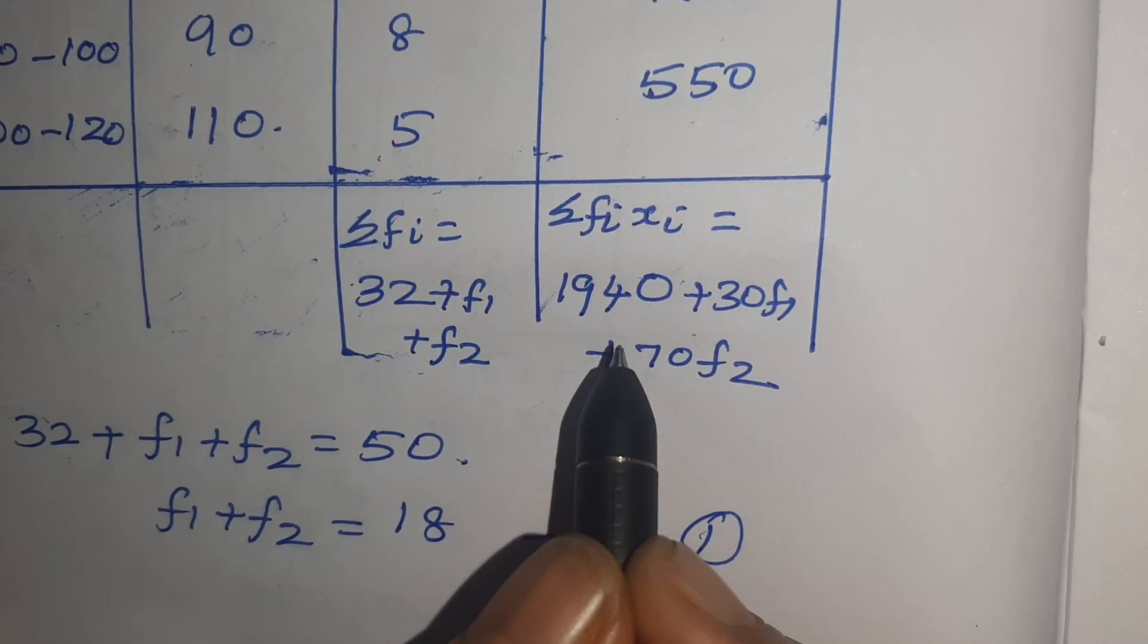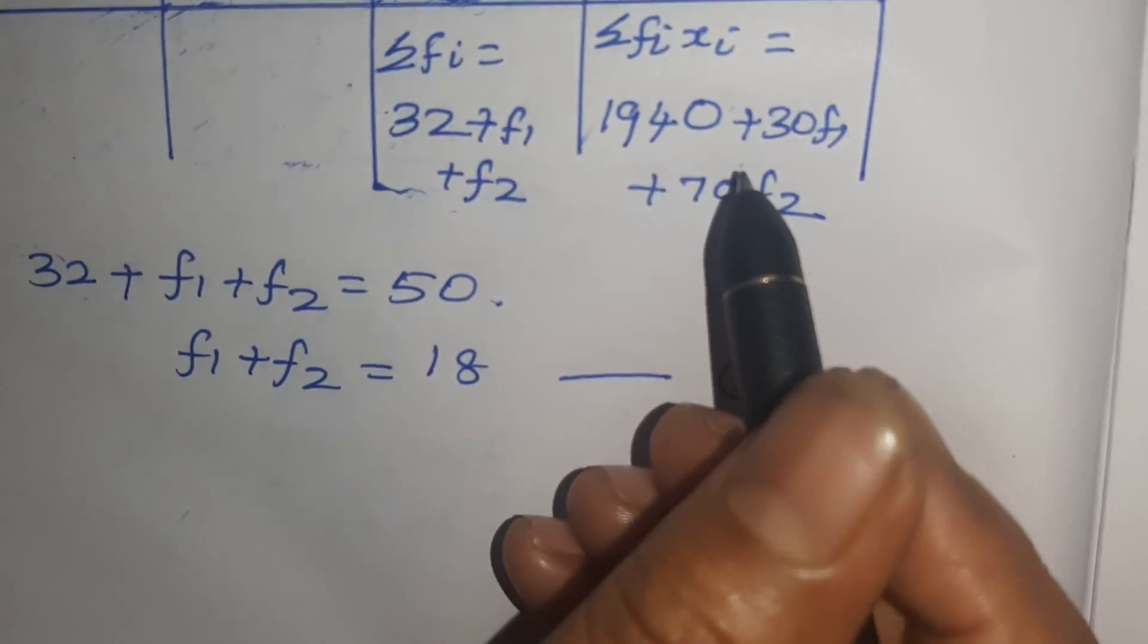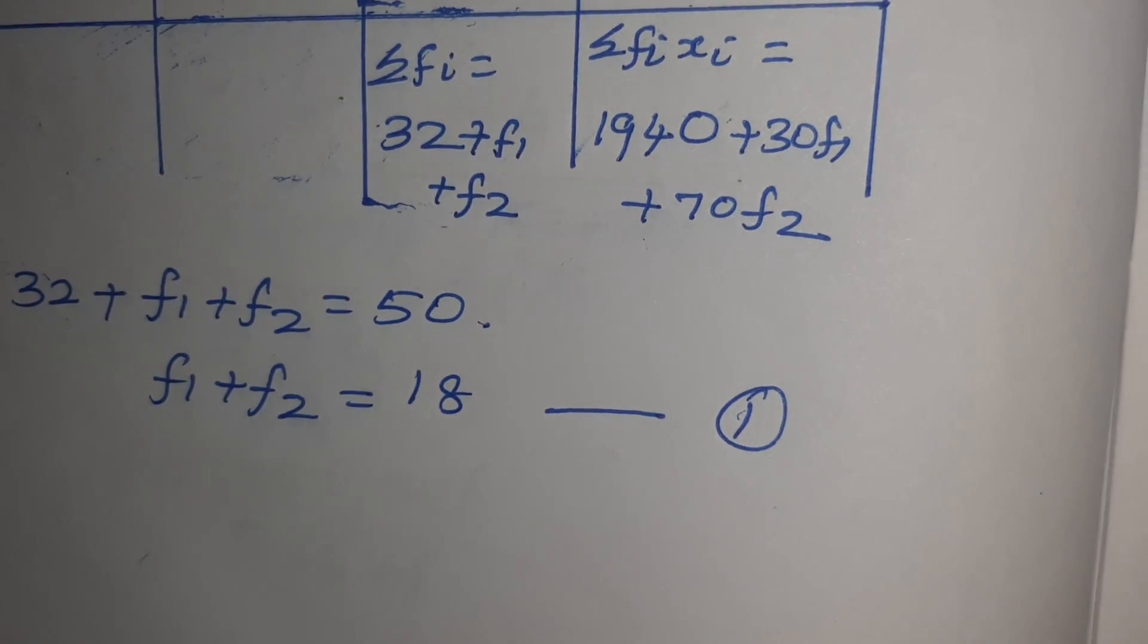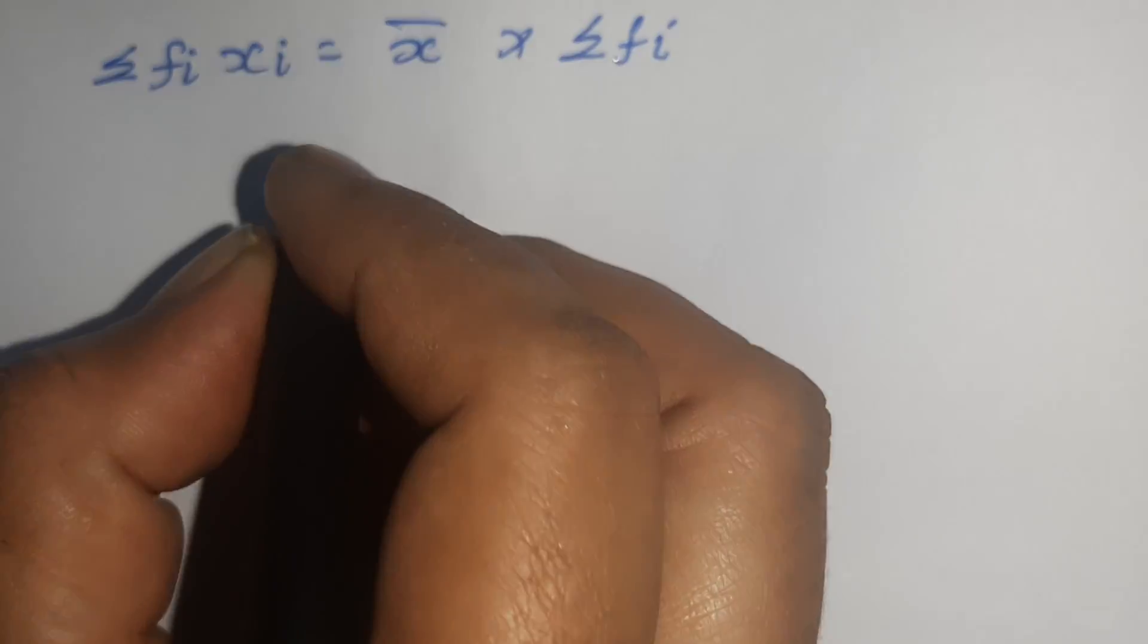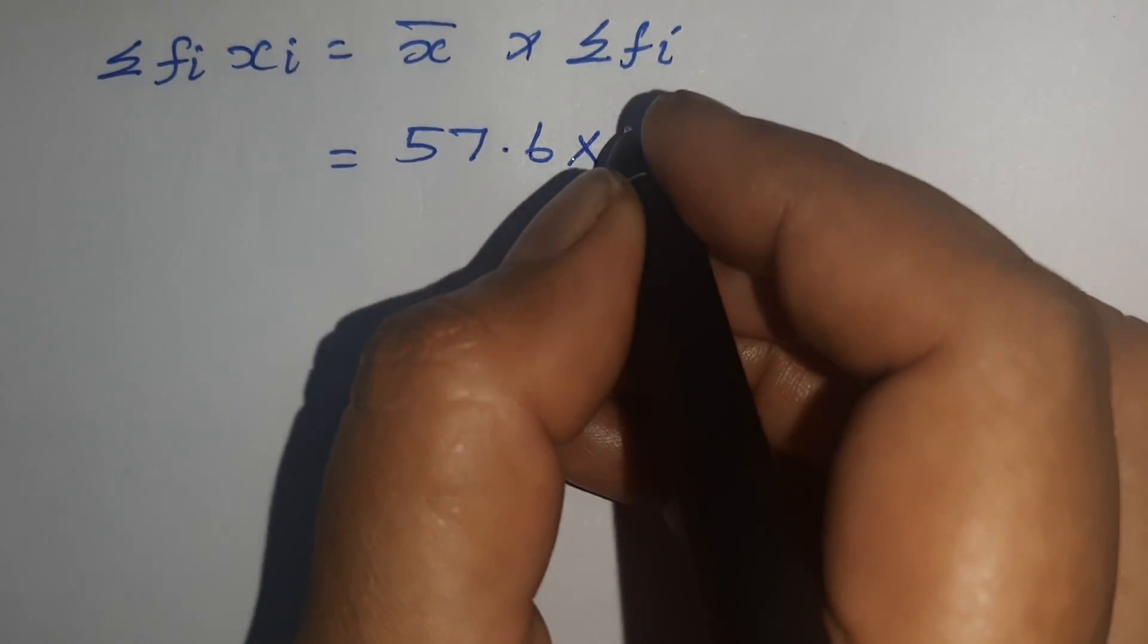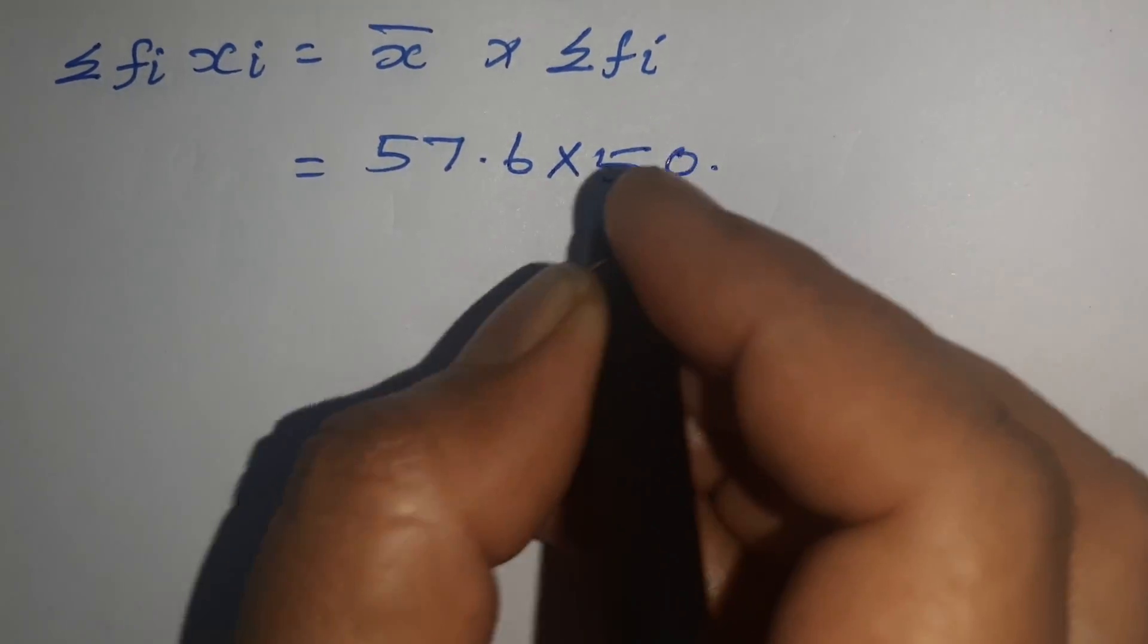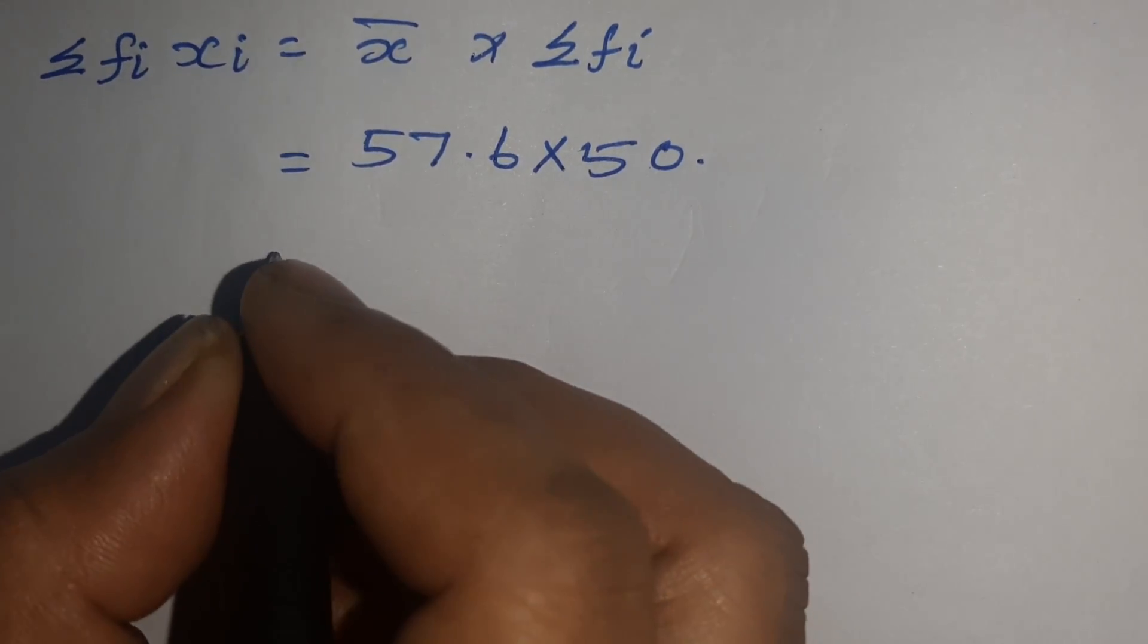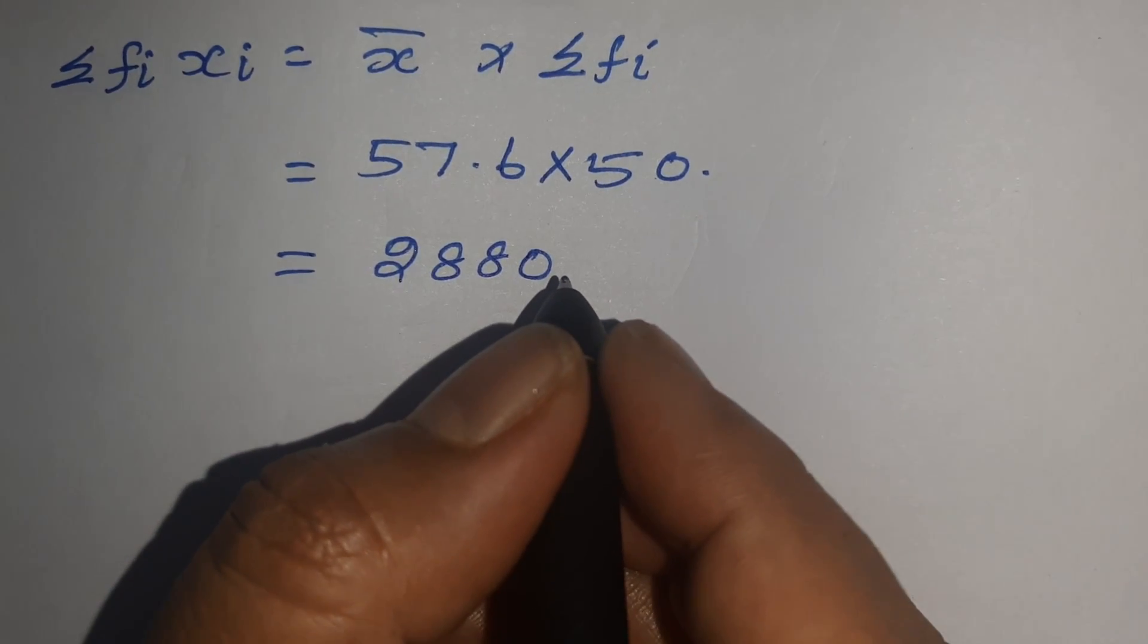Next, X bar. Here what is given: sigma Fi Xi equals X bar into sigma Fi. X bar is given as 57.6 into sigma Fi which is 50. That equals 2880.